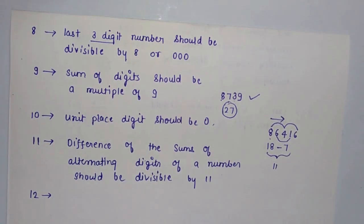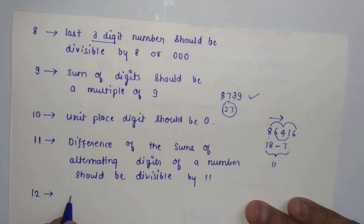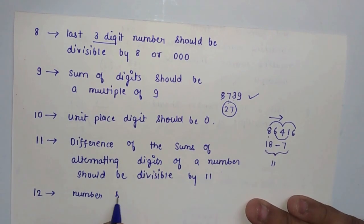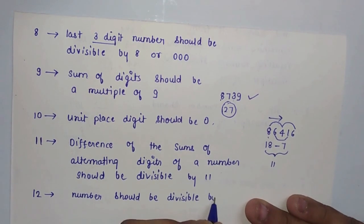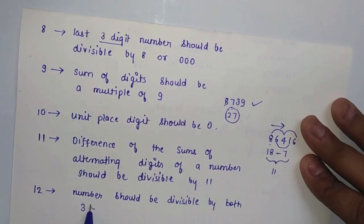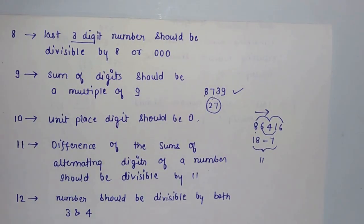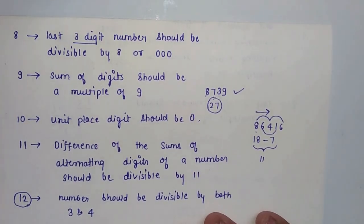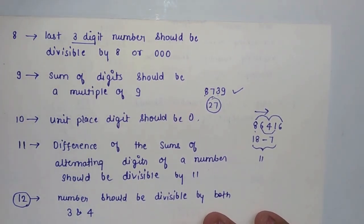The divisibility rule for 12 is very similar to the rule for 6, which required divisibility by 2 and 3. For 12, the number should be divisible by both 3 and 4. If it is divisible by both 3 and 4, then we can say the number is divisible by 12.